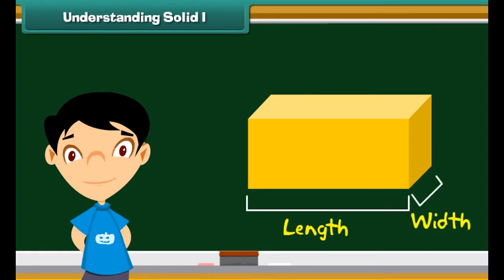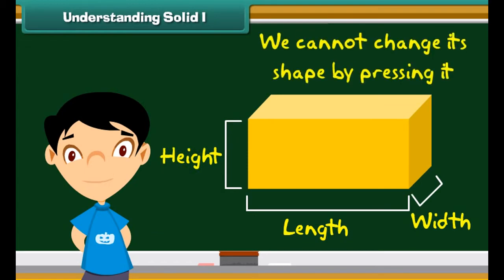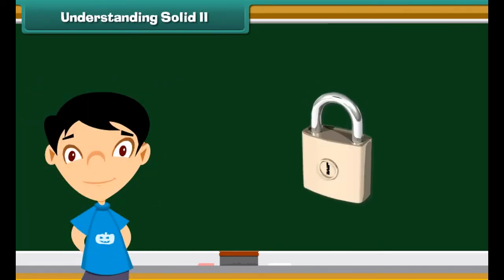Friends, look at this brick. This is a solid. This brick has a fixed shape. It has length, width, and height. It is hard. We cannot change its shape by pressing it. Thus, we can say a solid has definite shape and size and cannot be pressed easily.